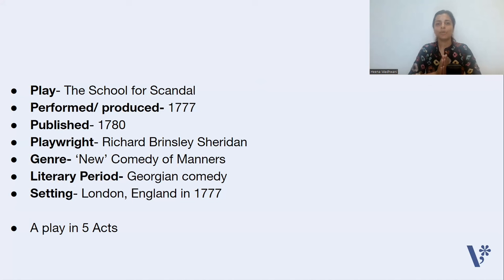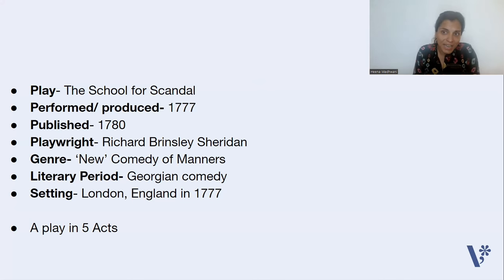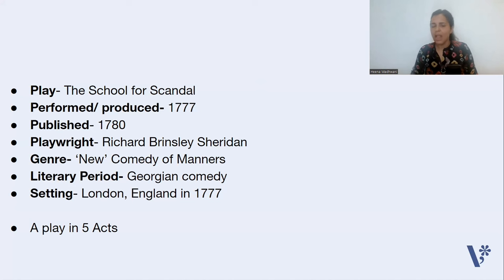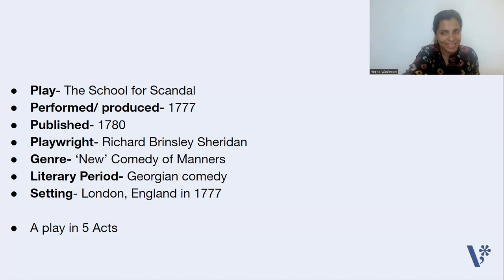The genre is new comedy of manners, and the literary period of The School for Scandal is a Georgian comedy. The setting is London, England in the year 1777. If you talk about the number of acts, The School for Scandal has five acts.